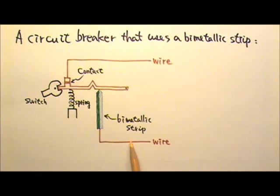This diagram shows a simplified circuit breaker that uses a bimetallic strip. When a current flows through the strip, it heats up and curls to the left.